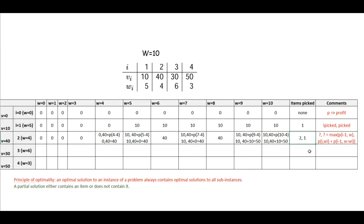We can verify this solution. If we pick item 1 and item 2, we should get 50. Item 1 is 10, item 2 is 40, total is 50. And is the solution valid? The total weight is 5 plus 4 equals 9, which is less than 10. So this is correct.